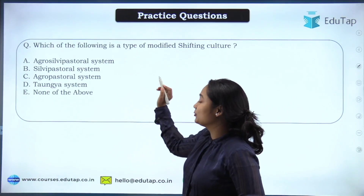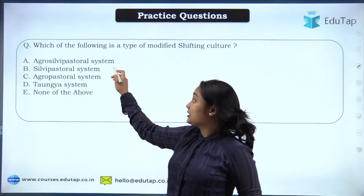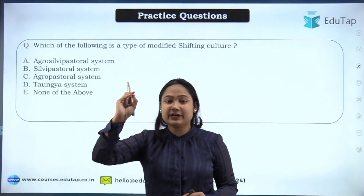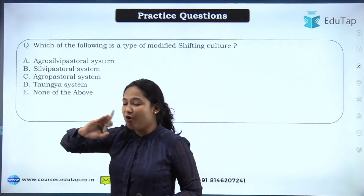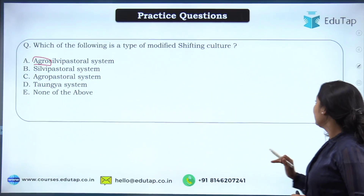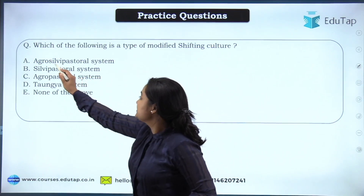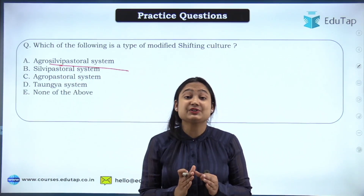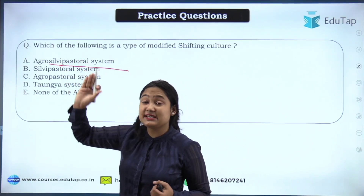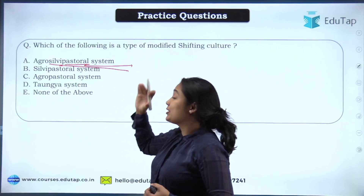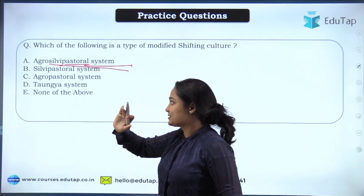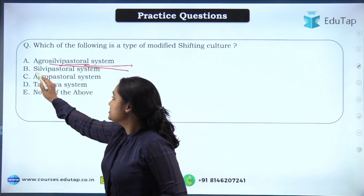For your examination, you should know how to identify the components of a particular agroforestry system by its name. Wherever you see 'agro' it means agriculture; 'silvi' means forestry — wherever perennial hedges or forest trees are involved; and 'pastoral' means growing pasture or fodder crops for animals — grazing land for your animals.